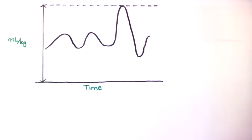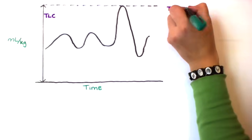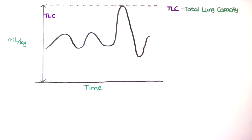The first thing we're going to look at is called the TLC, or the total lung capacity. Total lung capacity is the amount of gas in the lungs after a maximal inspiration. So if you take a deep breath in and hold it, the volume of gas in your lungs is the total lung capacity.